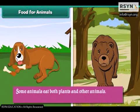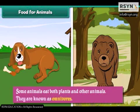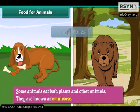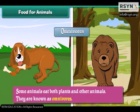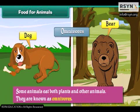Some animals eat both plants and other animals. They are known as omnivores. Examples of omnivores are bears, dogs etc.